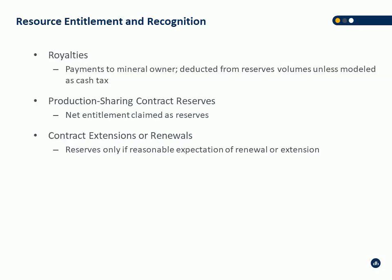Resource entitlement and recognition: PRMS is more internationally oriented than COGI in terms of discussing jurisdictions and contracts. It has a more generic description of royalties and how they're modeled, talks about production sharing contract reserves and entitlements, and contract extensions or renewals. Reserves should only be associated with contract extensions or renewals if there's a reasonable expectation of renewal. It discusses PSCs and RSCs and where the line should be drawn for reserves versus contract services in countries where the government allows companies to produce a portion of reserves for a set period.